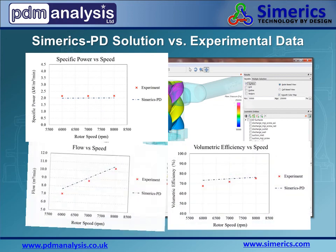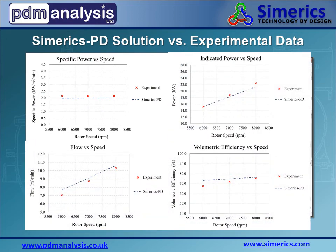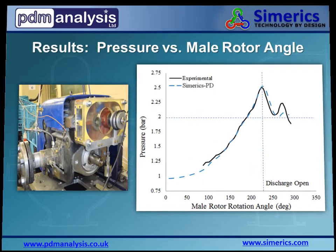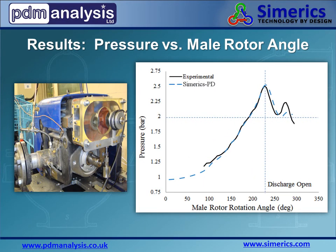These are some of the actual simulation results compared with experimental data collected by City University. Symerix PD was used like a virtual test stand to predict specific and indicated power, volumetric flow rate, and efficiency as they relate to rotor speed. This chart shows how Symerix PD was able to capture the pressure magnitude throughout the rotational cycle of the male rotor, with results of particular interest at the 230 degree position where the discharge was fully open.